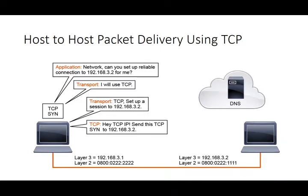We are going to begin with two computers on the network that want to talk to each other. We will have a DNS server providing some resolution. Let's assume an application is running on our computer that wants to send some traffic — maybe an email, maybe a Telnet session — whatever the case may be. It has some traffic that needs to be sent reliably.